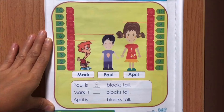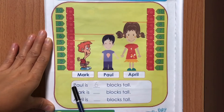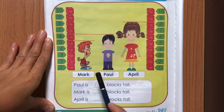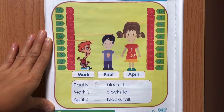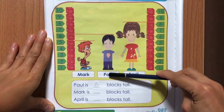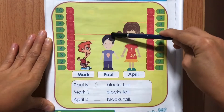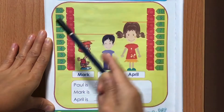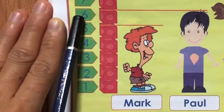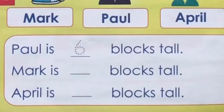P-A-U-L, Paul. This is Paul. How tall is Paul? Paul is six blocks tall. Trace number six.